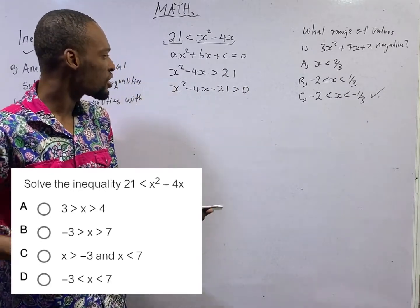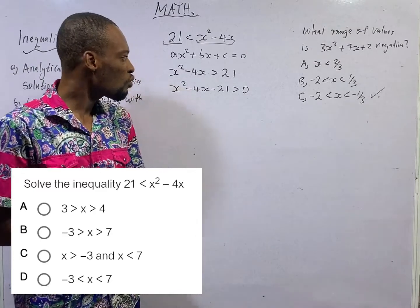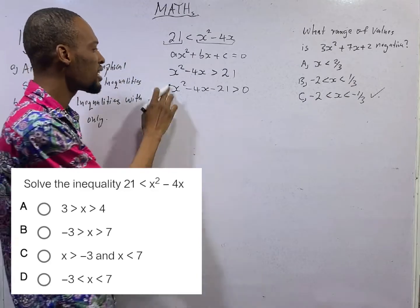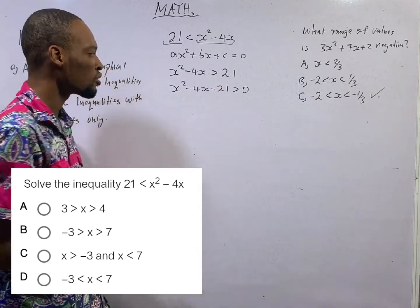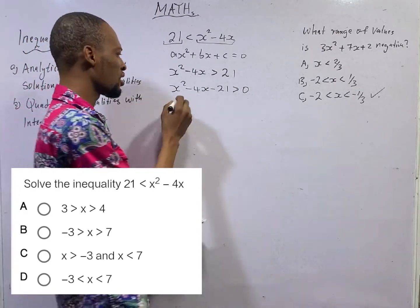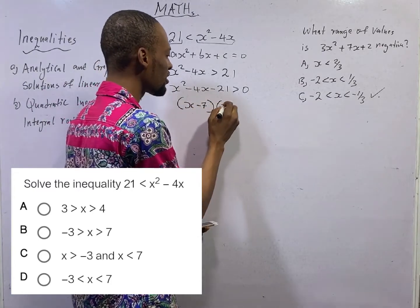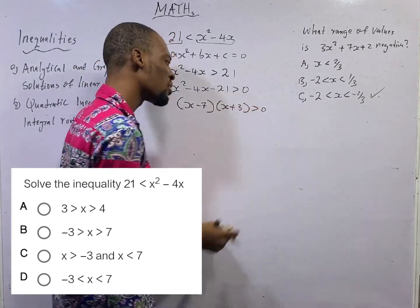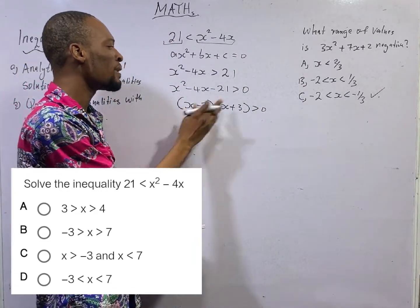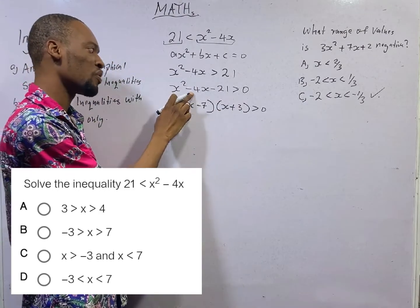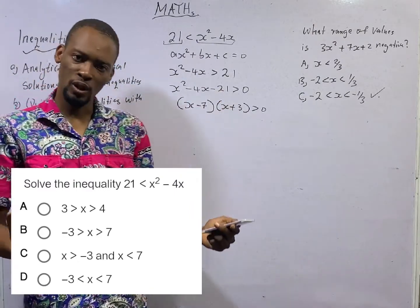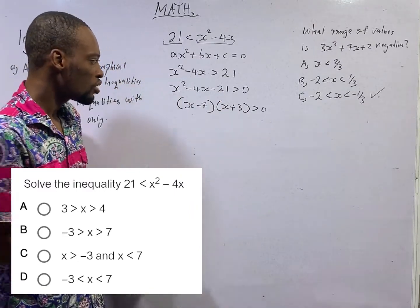Factorizing inequalities, we look for two numbers that when we add, we should be able to get minus 4. And when we multiply, we'll be able to get 1 times minus 21. We should be able to get minus 21. These numbers are not far-fetched. They are simply minus 7 and 3. If you add minus 7 and plus 3, you'll definitely get minus 4. If you multiply minus 7 and plus 3, you'll definitely get minus 21. So we qualify.